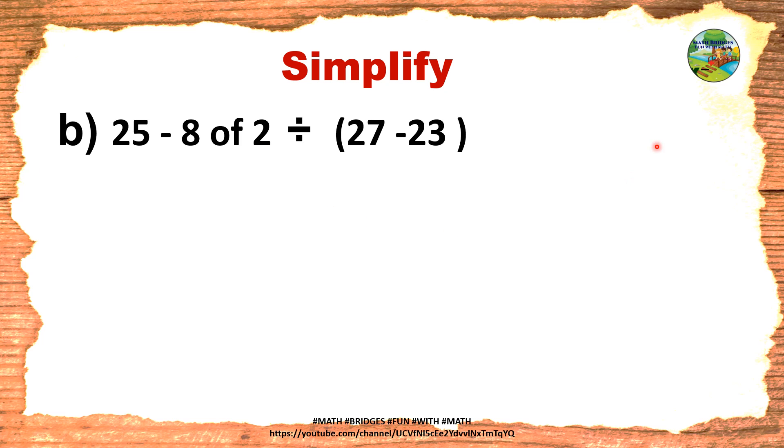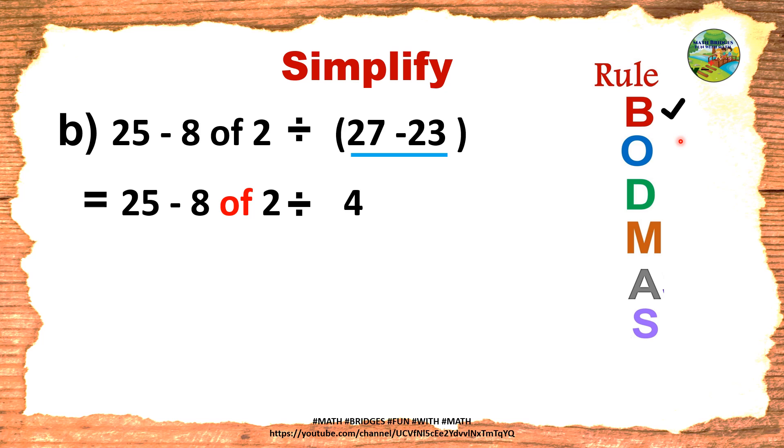Let's check with one more example. This is the question. So you have to write the rule in the sidewise on your book or paper: BODMAS. First step is brackets. Is there any brackets in the question? Yes. Underline. So what we are underlining, only that part we are solving. 25 minus 8 of 2 divided by 27 minus 23 is 4. Brackets is over, so tick it immediately.